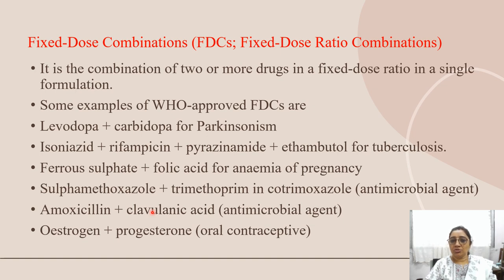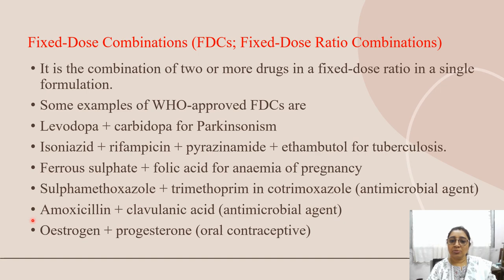Some examples of WHO-approved fixed dose combinations are: levodopa and carbidopa for Parkinsonism; isoniazid, rifampicin, pyrazinamide, and ethambutol for tuberculosis; ferrous sulfate plus folic acid for anemia of pregnancy; sulfamethoxazole and trimethoprim in cotrimoxazole as an antimicrobial agent; amoxicillin and clavulanic acid as an antimicrobial agent; and estrogen and progesterone combination for oral contraceptive pills.